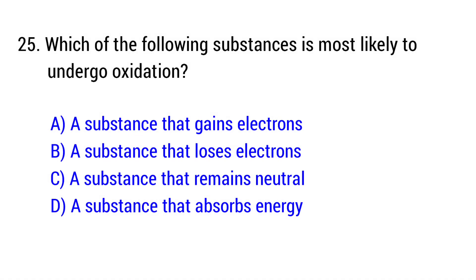Question number 25. Which of the following substances is most likely to undergo oxidation? The right answer is option B, a substance that loses electrons.